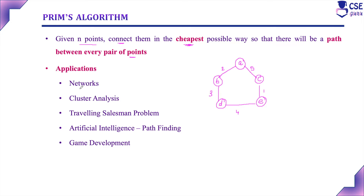The main applications of Prim's algorithm include all kinds of networks — for example, land network, TV network, landline cable network, and networks to provide drinking water. Next, to implement cluster analysis in data mining, the traveling salesman problem — where the salesman starts from the source city and needs to visit all other destination cities with the cheapest cost — and artificial intelligence for path finding and game development. There are vast applications wherever we need to establish a connection in the cheapest way.